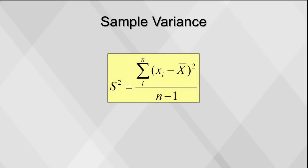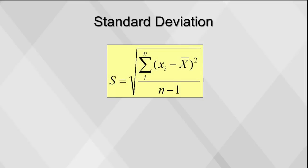Sample variance is calculated as the average of squared deviations of values from the mean. We square the differences from the mean to provide equal weight to observations below and above the mean. Values further away from the mean get higher weight than those close to the mean. Standard deviation is the most commonly used measure of variation — it shows the variation around the mean and has the same units as the original data. It is calculated by finding the square root of the variance.